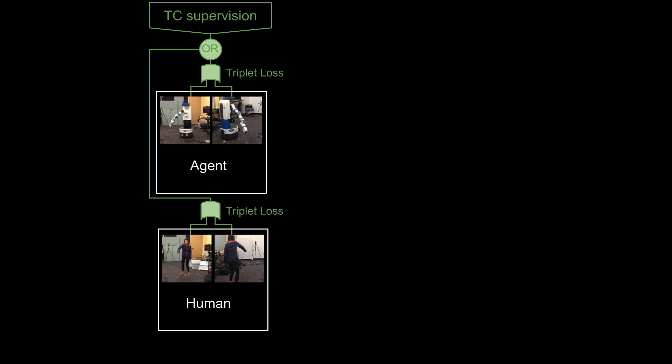First, the robot observes humans and itself from multiple viewpoints, and uses the same TCN architecture from the pouring experiments to learn a pose representation. Second, while observing itself, the robot learns a self-supervised joint decoder that maps from the TCN representation to its own internal joint angles at the time.